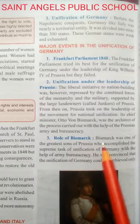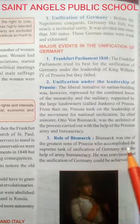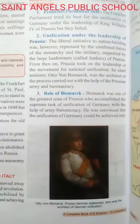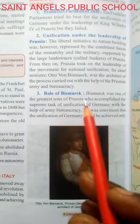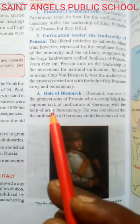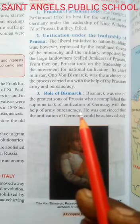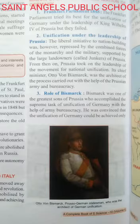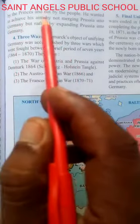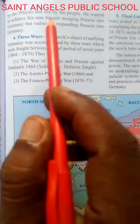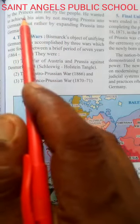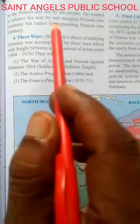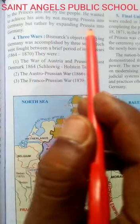The role of Bismarck. Bismarck was one of the greatest sons of Prussia who accomplished the supreme task of the unification of Germany with the help of the army and bureaucracy. He was convinced that the unification of Germany could be achieved only by the princes and not by the people. He wanted to achieve this not by merging Prussia into Germany, but rather by expanding Prussia into Germany.